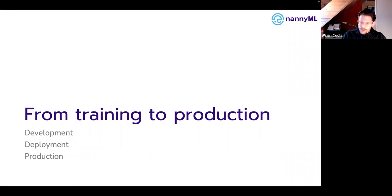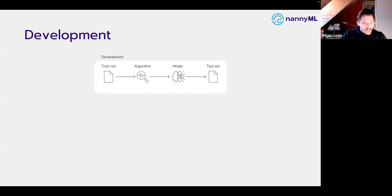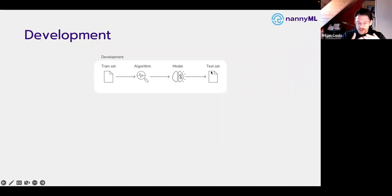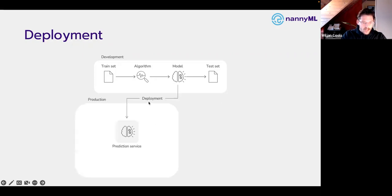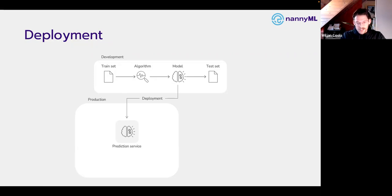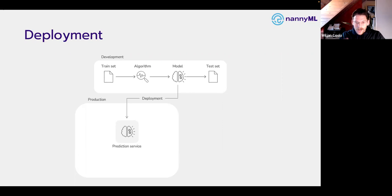Some quick words about developing a machine learning model and putting it into production. We start with some training data including our validation data, feed it to an algorithm, create a model, and apply it on a test set. If we're satisfied with the results, we put it in production — the most straightforward way is to put it behind an API and create a prediction service. If there are people or businesses or decisions being taken on these predictions, then technically your machine learning model is in production and you need to be monitoring it.